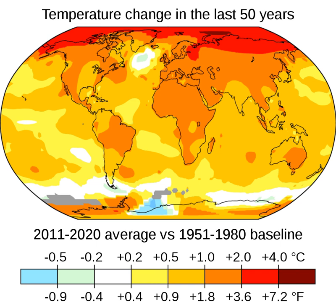Section 2: Observed temperature rise. Global surface temperature reconstruction over the last 2,000 years uses proxy data from tree rings, corals, and ice cores (in blue), with directly observed data in red. Land surface temperatures have increased faster than ocean temperatures. Multiple independent instrumental datasets show that the climate system is warming. The 2011 to 2020 decade warmed 1.09 degrees Celsius (between 0.95 and 1.20 degrees Celsius) compared to the pre-industrial baseline of 1850 to 1900.